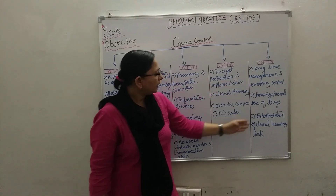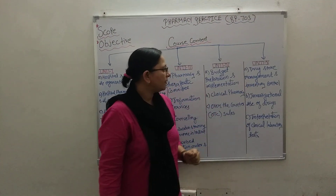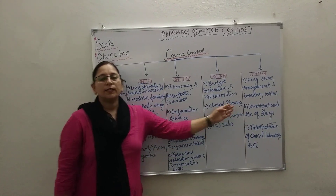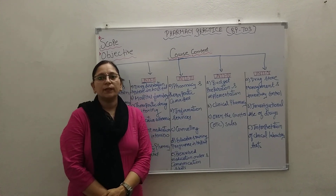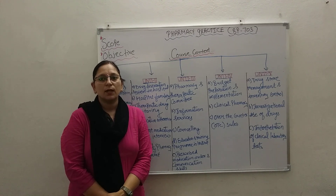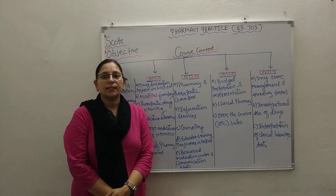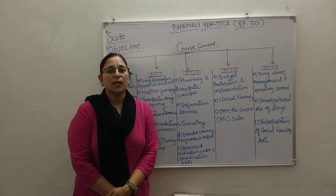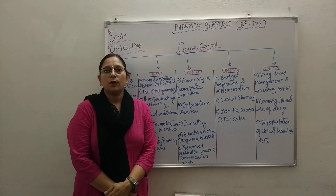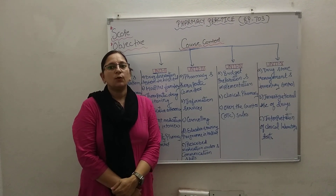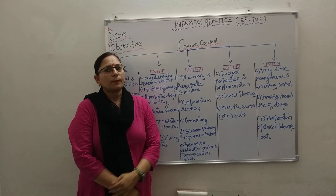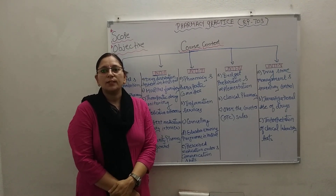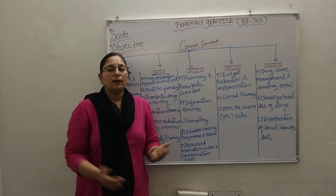The last unit, Unit 5, is divided into three parts: drug store management and inventory control, investigation and use of drugs, and interpretation of clinical laboratory tests. In drug store management and inventory control, we will learn about the organization of drug stores, types of materials, stock and storage conditions, and purchase and inventory control. In investigation and use of drug descriptions, we will cover principles involved, classification, control identification, and the role of the hospital pharmacy advisory committee. In interpretation of clinical laboratory tests, blood chemistry, hematology, and urine analysis tests are covered.